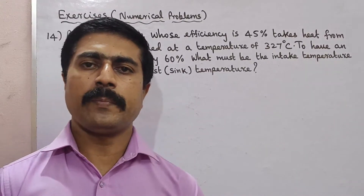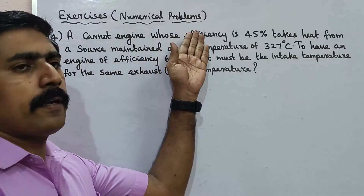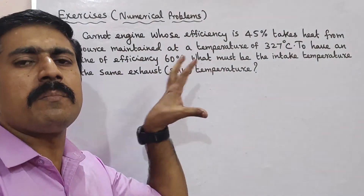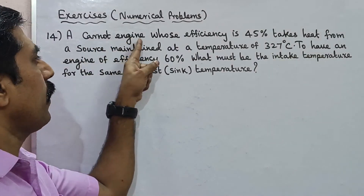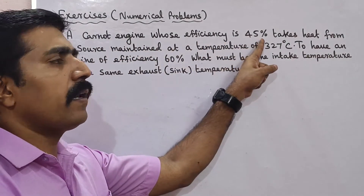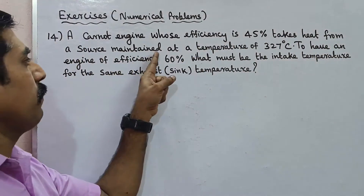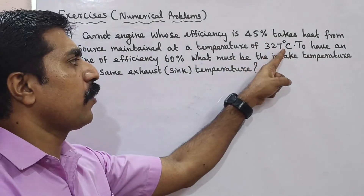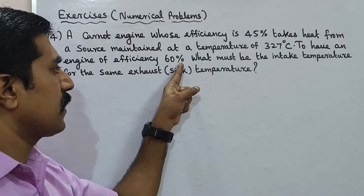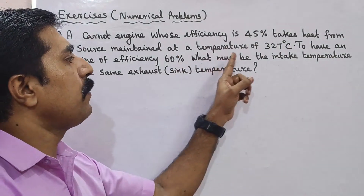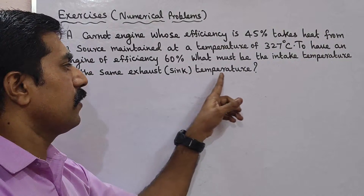Hi students, now we are talking about the numerical problems. A Carnot engine whose efficiency is 45% takes heat from a source maintained at a temperature of 327 degrees Celsius. To have an engine of efficiency 60%, what must be the intake temperature for the same exhaust temperature?